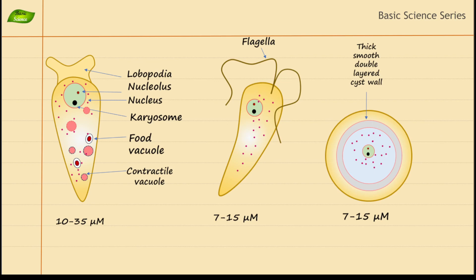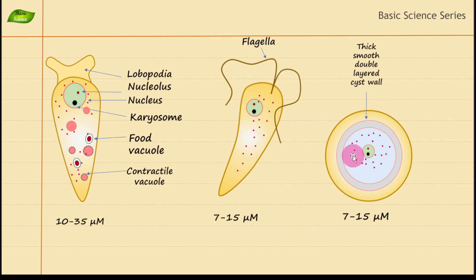Naegleria fowleri is one of the most dangerous pathogens — a free-living amoeba that can cause serious brain infection and is also known as the brain-eating amoeba. We have now discussed all three morphological forms, their illustrations, functions, shape, size, and how transitions happen between forms. In the next video, we will discuss the complete life cycle of Naegleria fowleri, including clinical manifestations and how it travels from the environment into the brain.